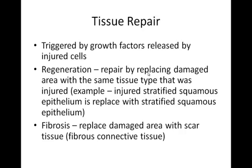We're on to tissue repair. A lot of damage occurs in your body, and when you damage your tissues, your injured cells are going to release things called growth factors. Growth factors are hormones released by cells, and they trigger nearby cells to undergo mitosis to repair the area, as well as triggering immune cells such as white blood cells to creep in and help clean up. When tissue is damaged, we repair by two processes: regeneration and fibrosis.